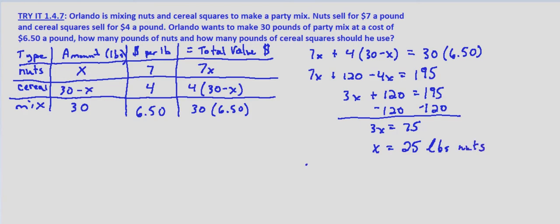So 25 pounds of nuts. And so there are 30 minus 25, which equals 5 pounds of cereal.